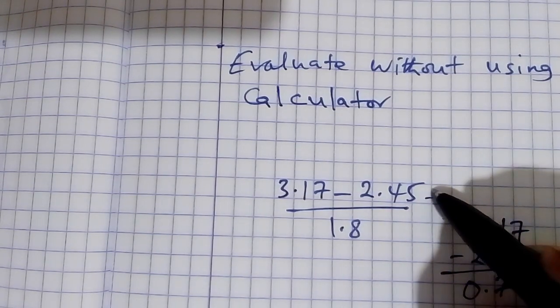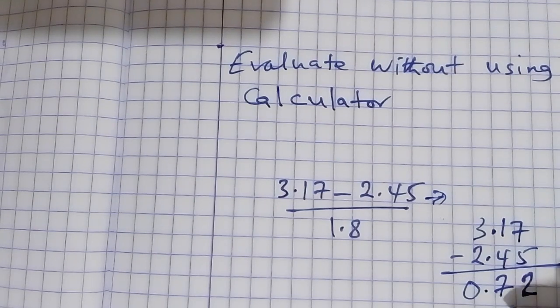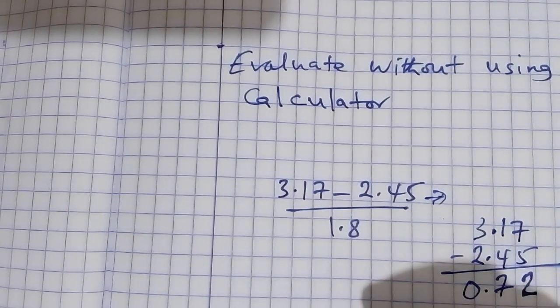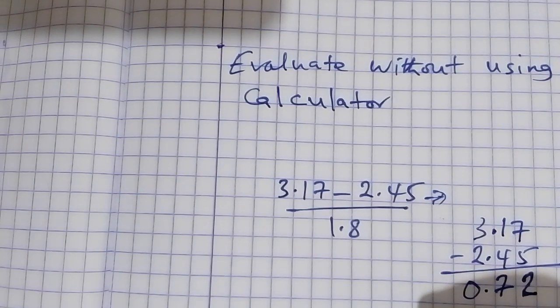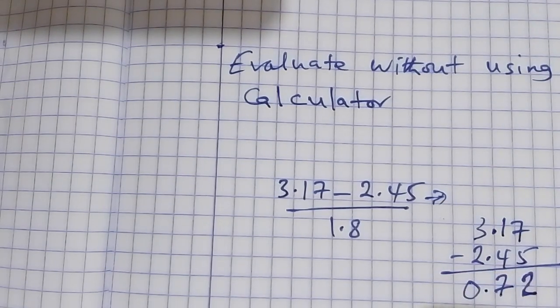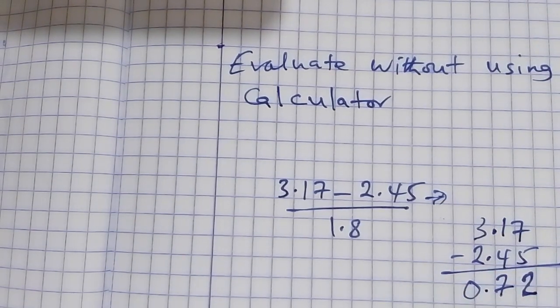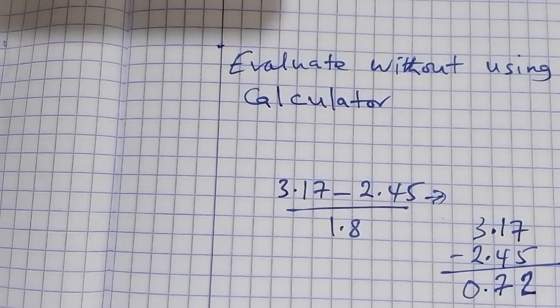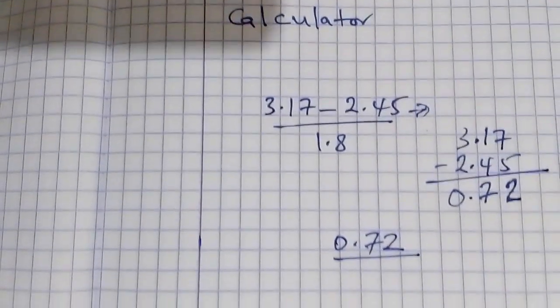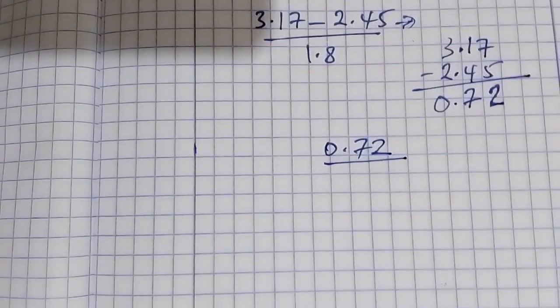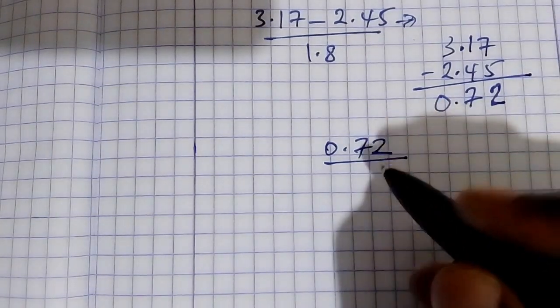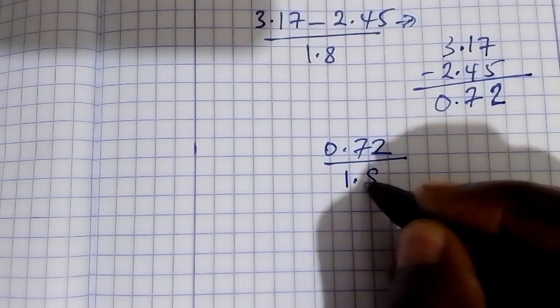So in the numerator we end up with 0.72. 0.72 over 1.8.